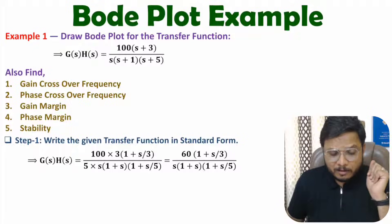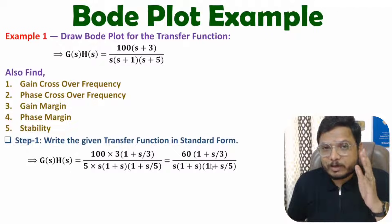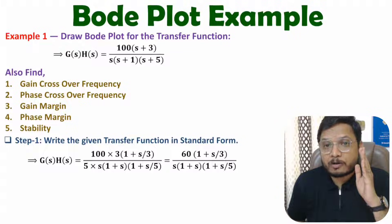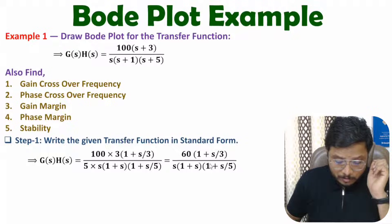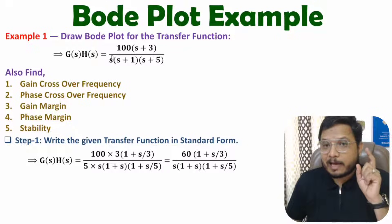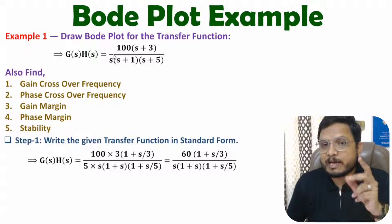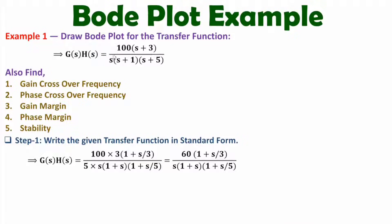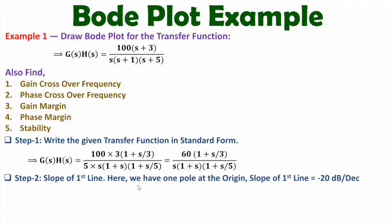Once we have the standard form, in the second step we need to identify the slope of the first line. The slope of the first line is based on the location of poles or zeros at the origin. With the given system we have one pole at the origin, so the slope of the first line will be −20 dB per decade. If we had one zero at the origin the slope would be +20 dB per decade; if we had two poles at the origin the slope would be −40 dB per decade.